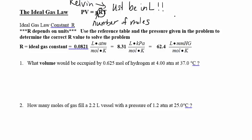A couple new things: R is a constant on your formula chart. There are three different R values listed. We use R = 0.0821 if pressure is in atmospheres — and that's why volume must be in liters. Use R = 8.31 if pressure is in kPa. Use the third R if pressure is given in millimeters of mercury. You just need to figure out which R to use based on your pressure units.